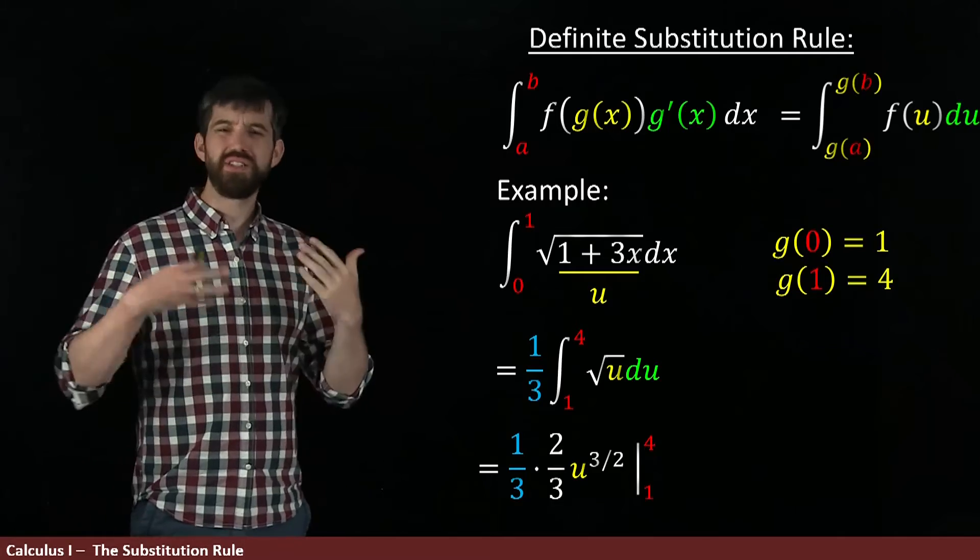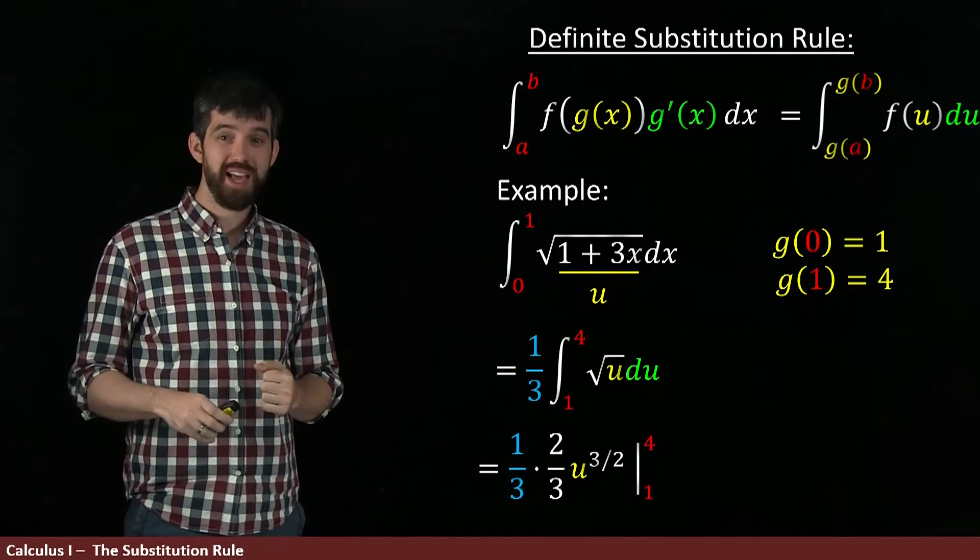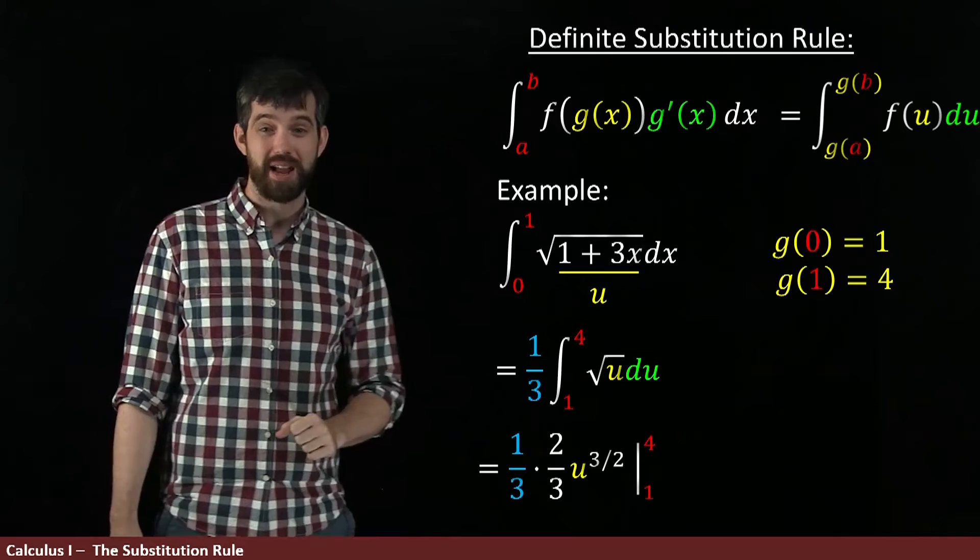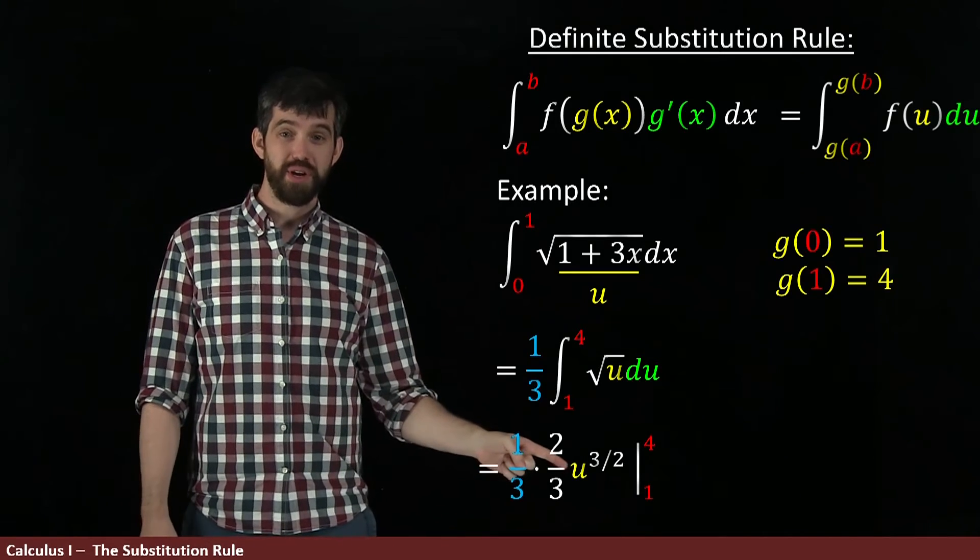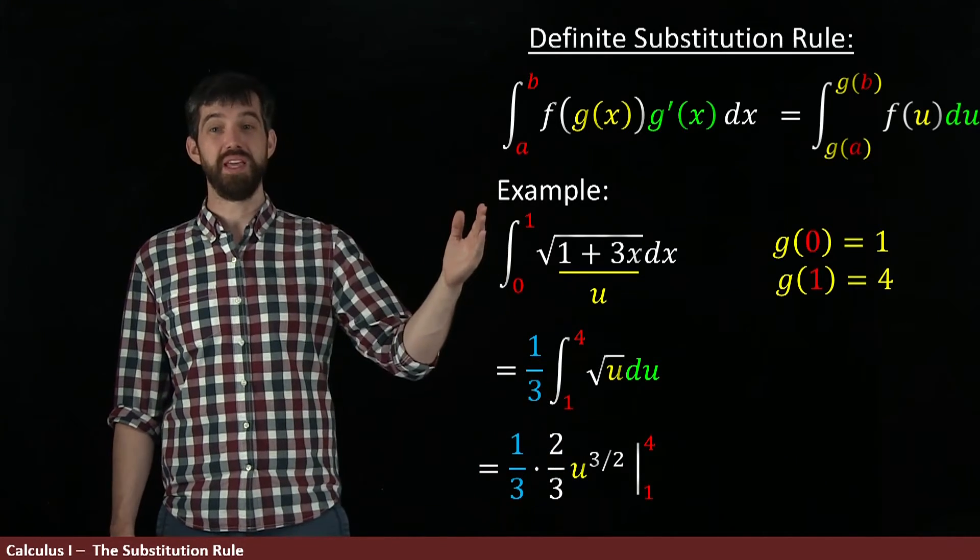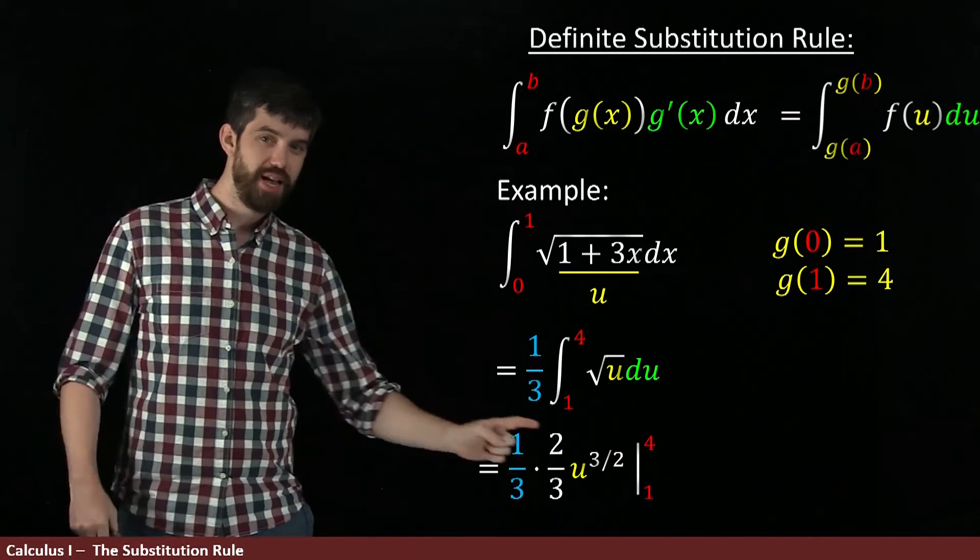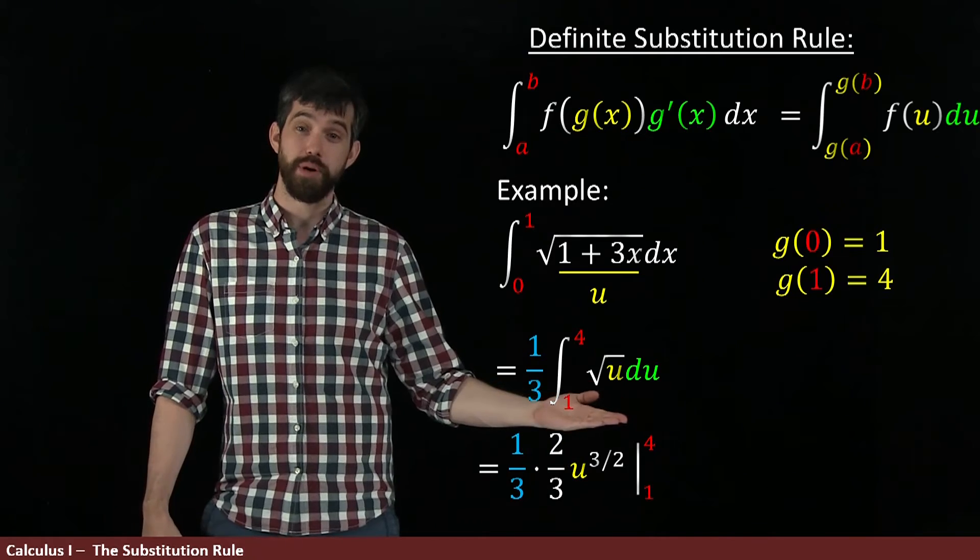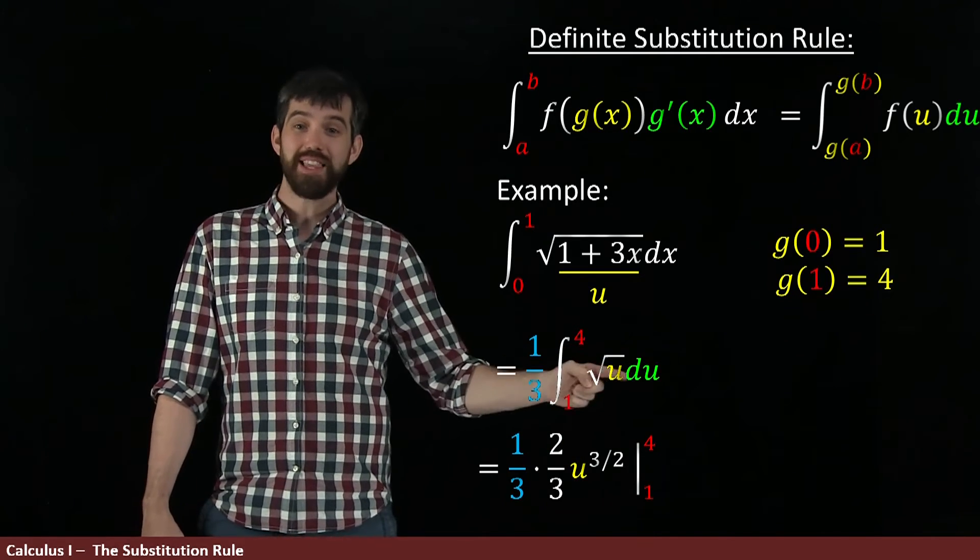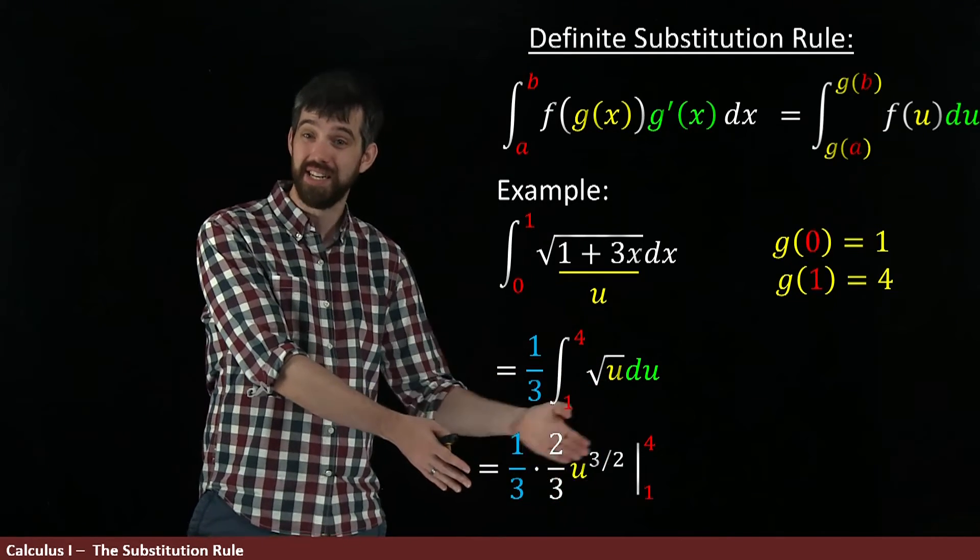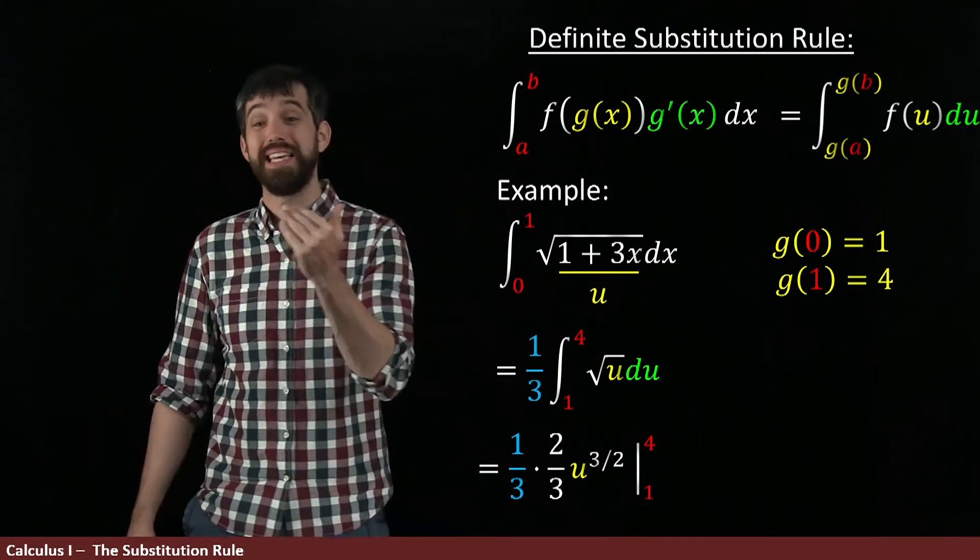By the way, since taking derivatives is usually a little bit easier for us at the beginning, it's always good to do this quick check. If I take the derivative of u to the 3 halves, it would be the 3 halves comes out the front, cancels with the 2 thirds, and goes to u to the 3 halves minus 1, which is the square root. So if you ever forget these formulas, take what you're guessing and take its derivative and verify that it really is an antiderivative.